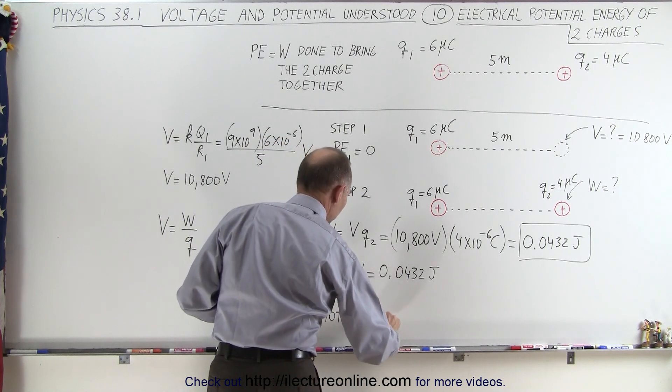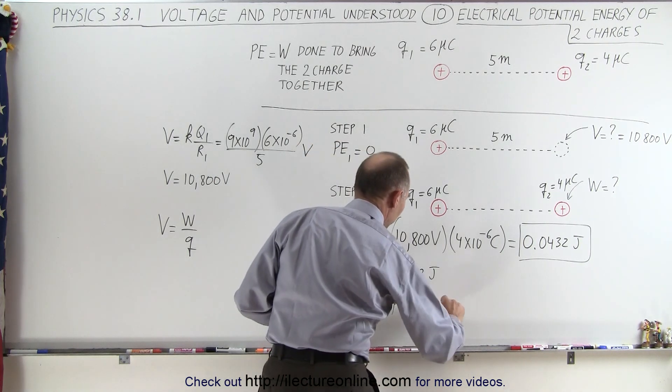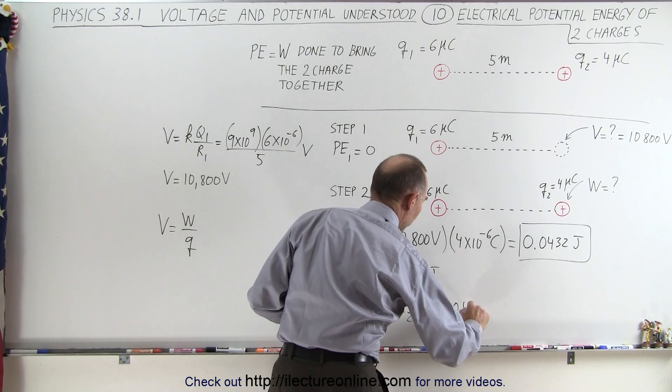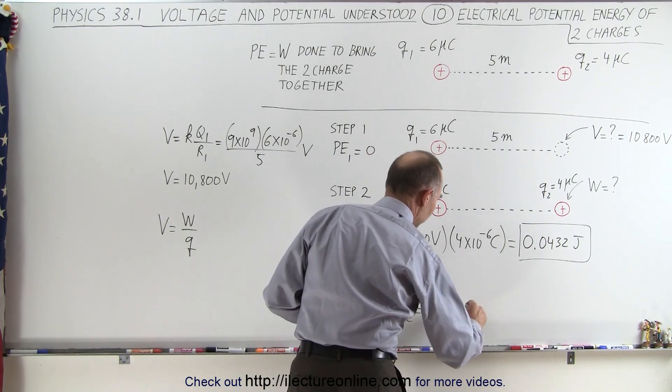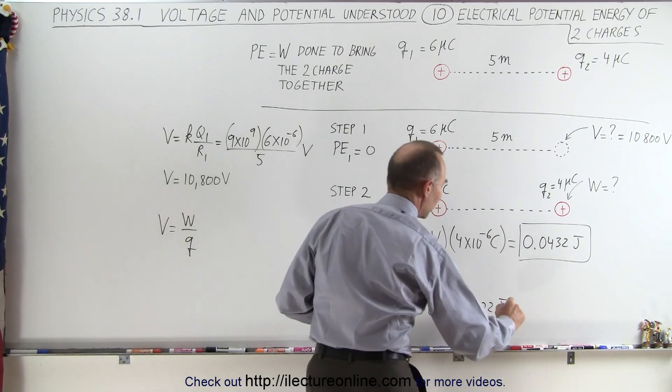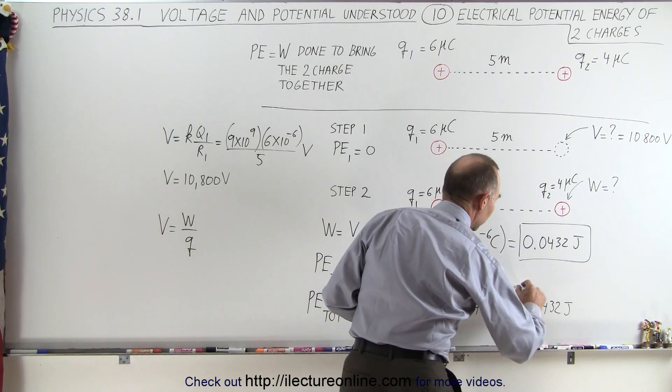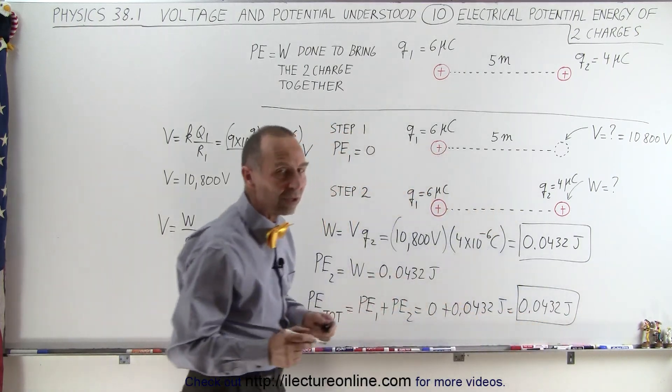So the total potential energy for the two steps combined is going to be potential energy 1 plus potential energy 2, which is going to be 0 plus 0.0432 joules, which is going to be equal to 0.0432 joules. So I added a few extra steps here, but it was there for a reason,